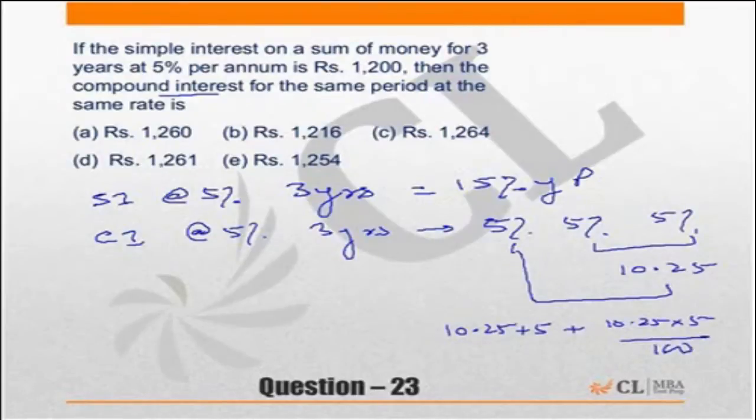10 plus 5 is 15, 0.25 plus 10.25 into 5 by 100 is 0.5125.